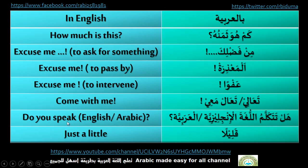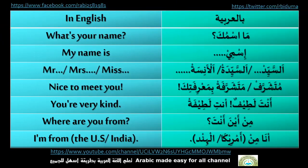Do you speak English or Arabic — just a little. Ma ismuk means 'what is your name,' and ismi means 'my name is' — after which you can mention your name. Al-sayyid, al-sayyida, and al-anisa mean 'mister,' 'mrs.,' and 'miss' respectively.